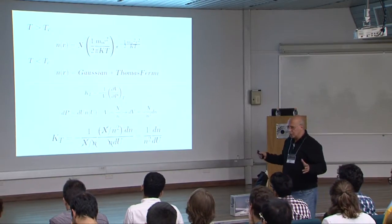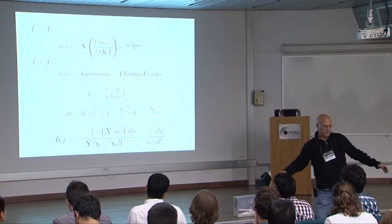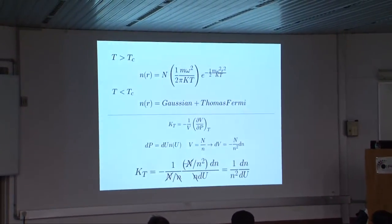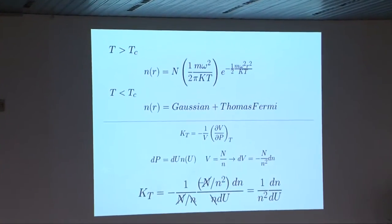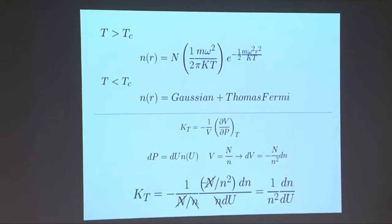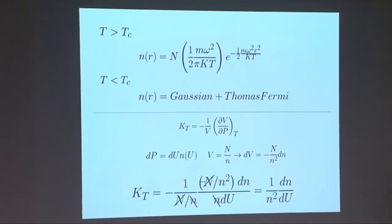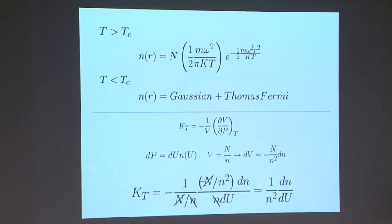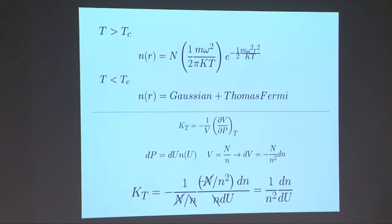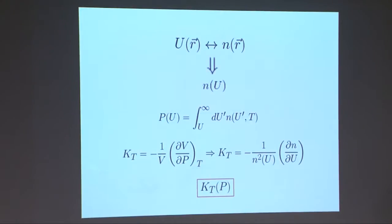When I have a condensate, this is not true. I have a profile of density. And many people up to now do local density approximation. Even science papers they publish doing local density approximation. Something happens. One of the things we are very interested in is compressibility. Compressibility is one of those susceptibilities that shows a lot about phase transition.